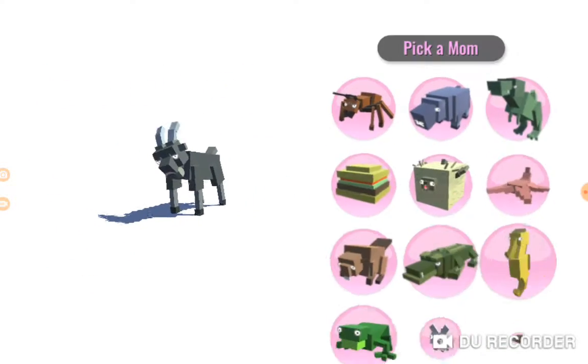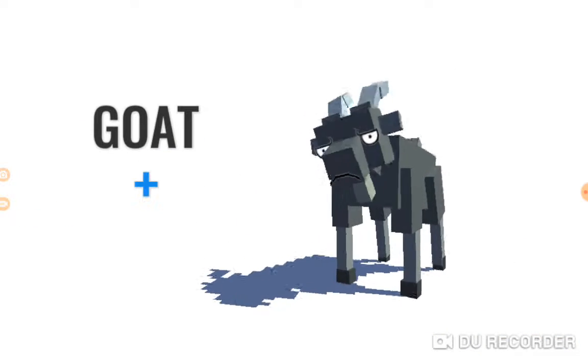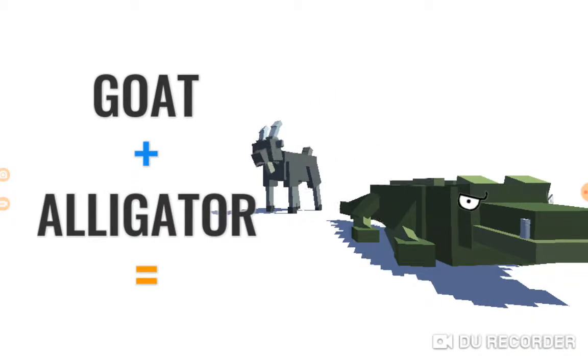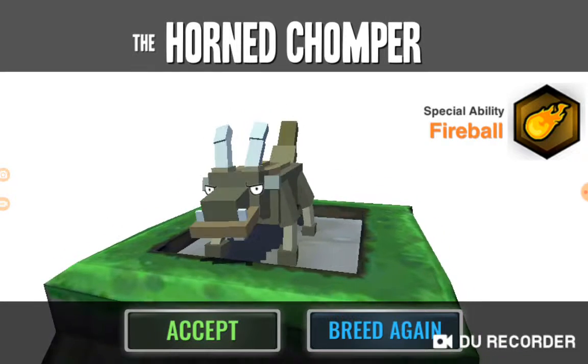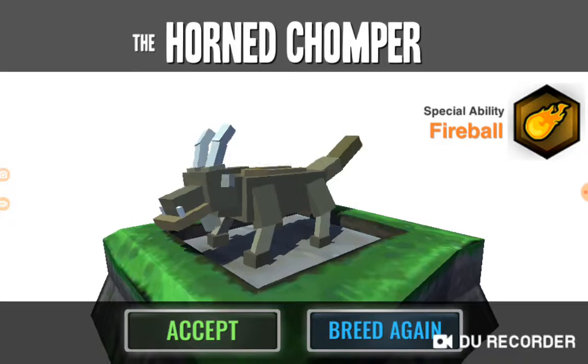Goat, goat with, goat with alligator equals the goat-are-later, a goat-are-gator. Oh and tromper, this is not tromper from Plants vs Zombies guys.